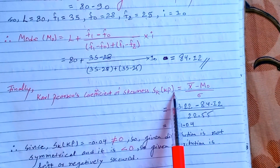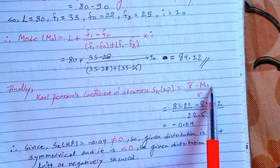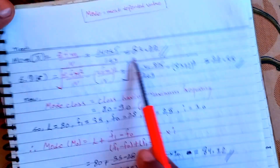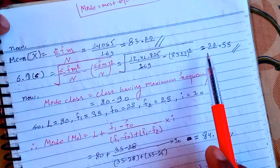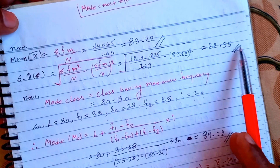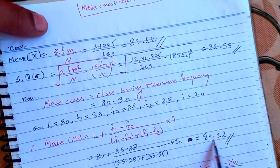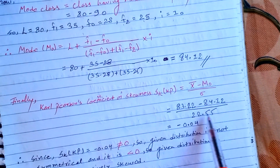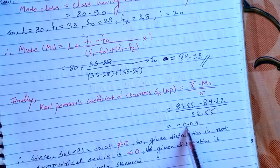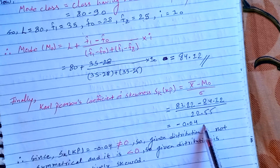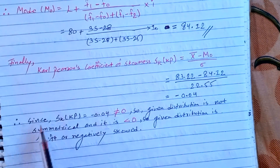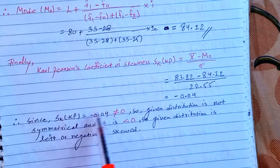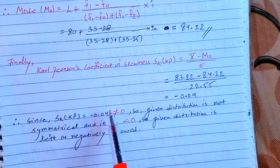The formula is: SK = (mean minus mode) divided by standard deviation. The mean value is 83.222, the standard deviation is 22.55, and the mode is 84.12. Putting these values in and solving, we get SK (Pearson's coefficient of skewness) = minus 0.04.